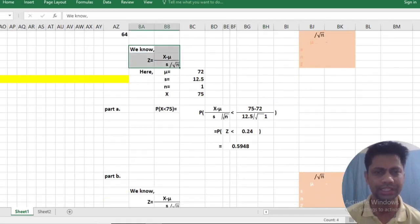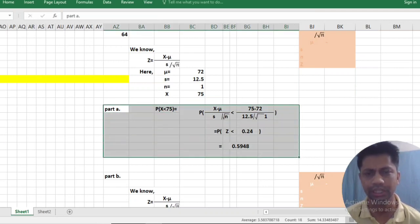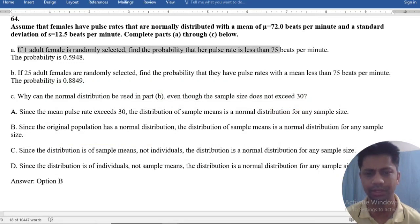We know that z is equal to this, and mu is 72, s is this one. By using probability, we have to write as probability of x less than 75. That means which says that less than 75 per minute.